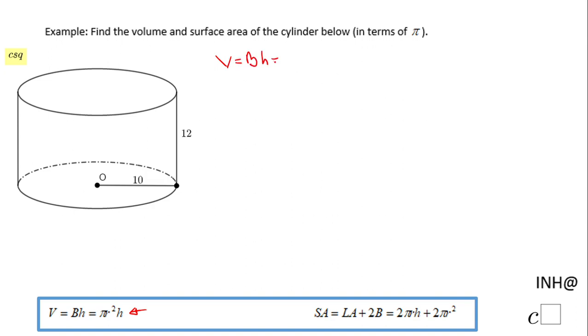In this case the base is a circle and the area of the circle is πr² times the height. So let's start with the area of the base πr².